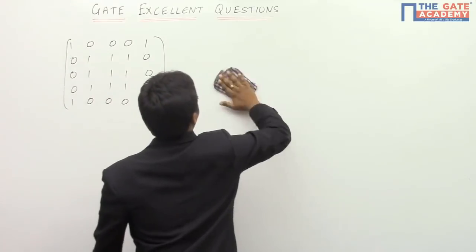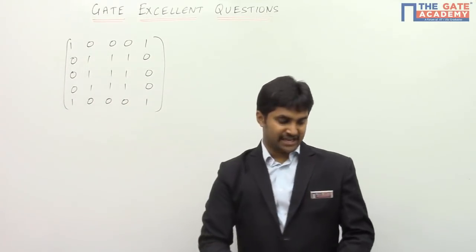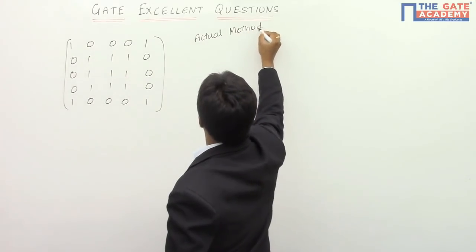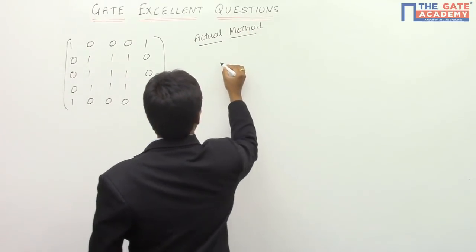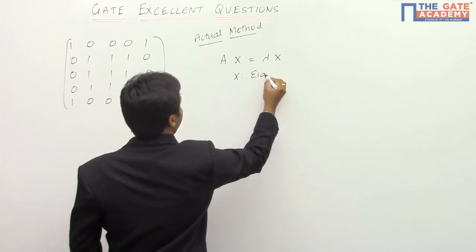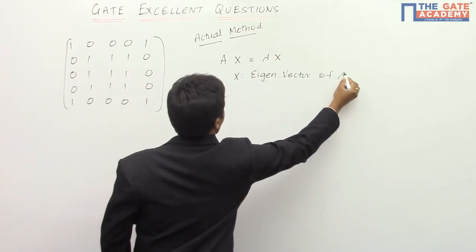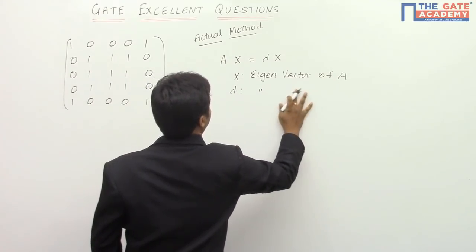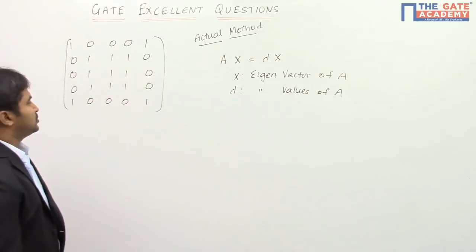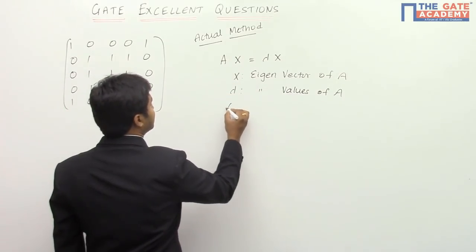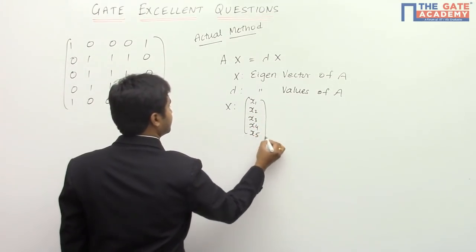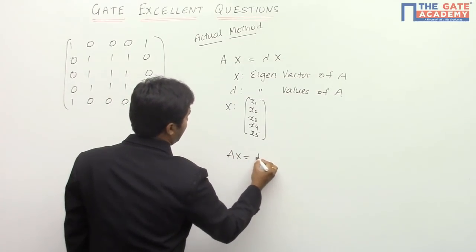Now let us look at the actual correct method of solving this problem. We know that A multiplied by X is equal to lambda multiplied by X, where X is the eigenvector of matrix A and lambda is what we call the eigenvalues of A. Let us consider X to be the vector [x1, x2, x3, x4, x5]. So I will set up A·X = λ·X.